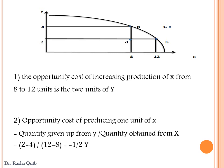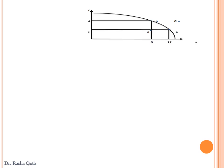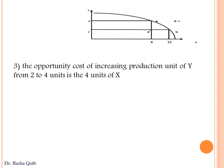The third required item is to calculate the opportunity cost of increasing the production of Y from 2 units to 4 units. Here we are moving from point B to point A. In order to increase Y by 2 units, we must give up 4 units of X. So the opportunity cost of increasing the production of Y by 2 units is the 4 units of X that are given up.